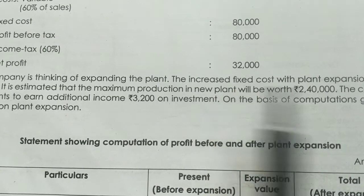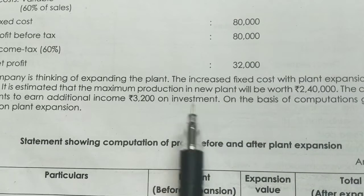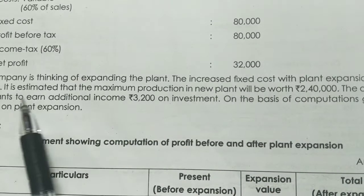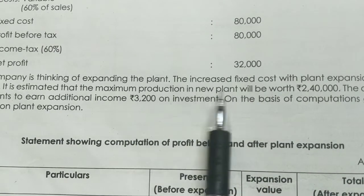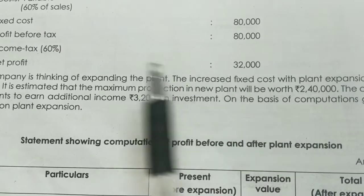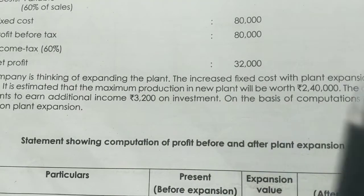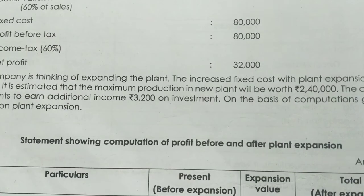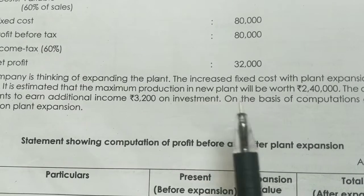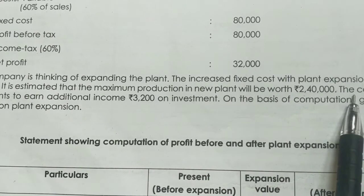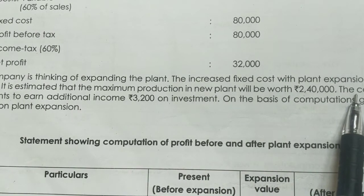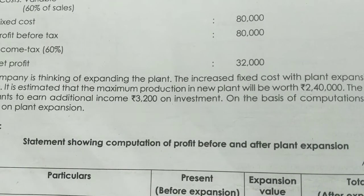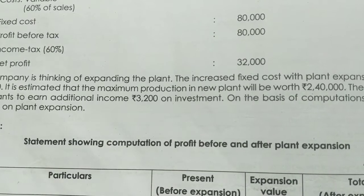The fixed cost increase is 40,000. It is estimated that maximum production in the new plant will be 2,40,000. The company also wants to earn additional income of 3,200 on investment. On the basis of this computation, the question asks for your opinion on plant expansion.